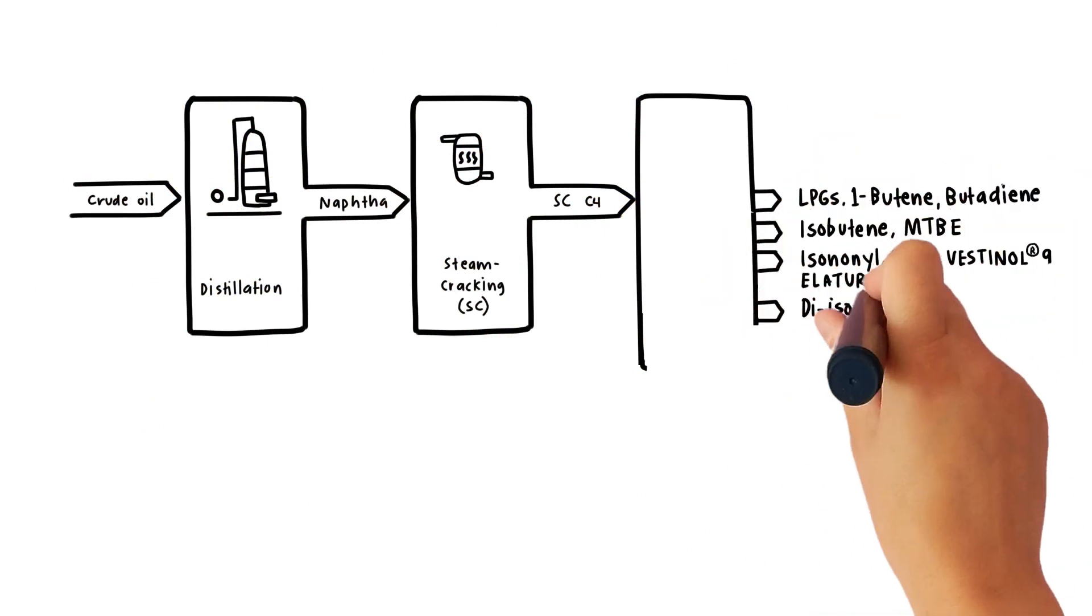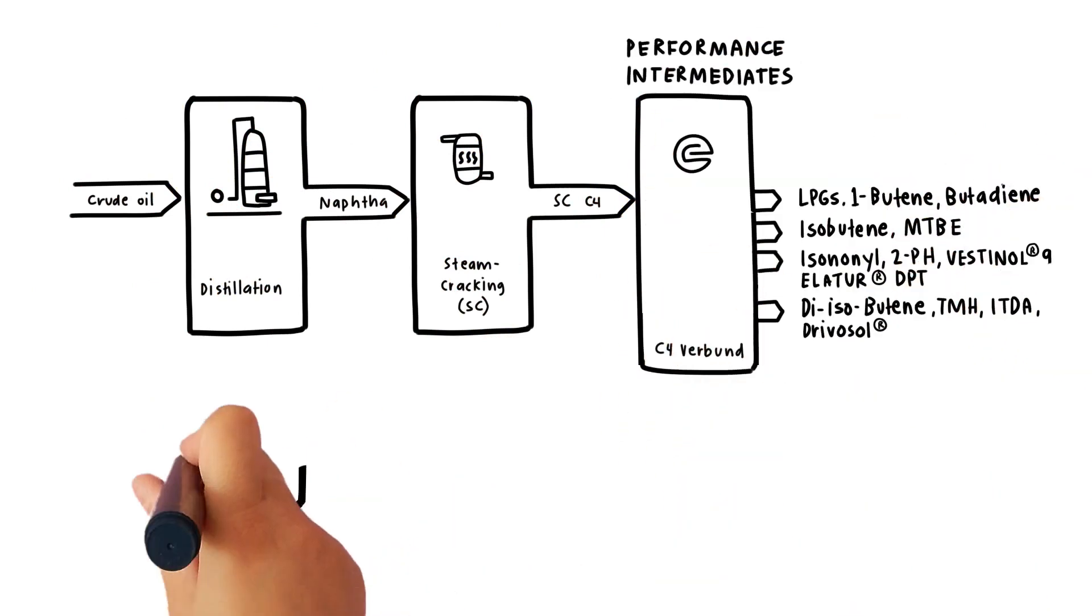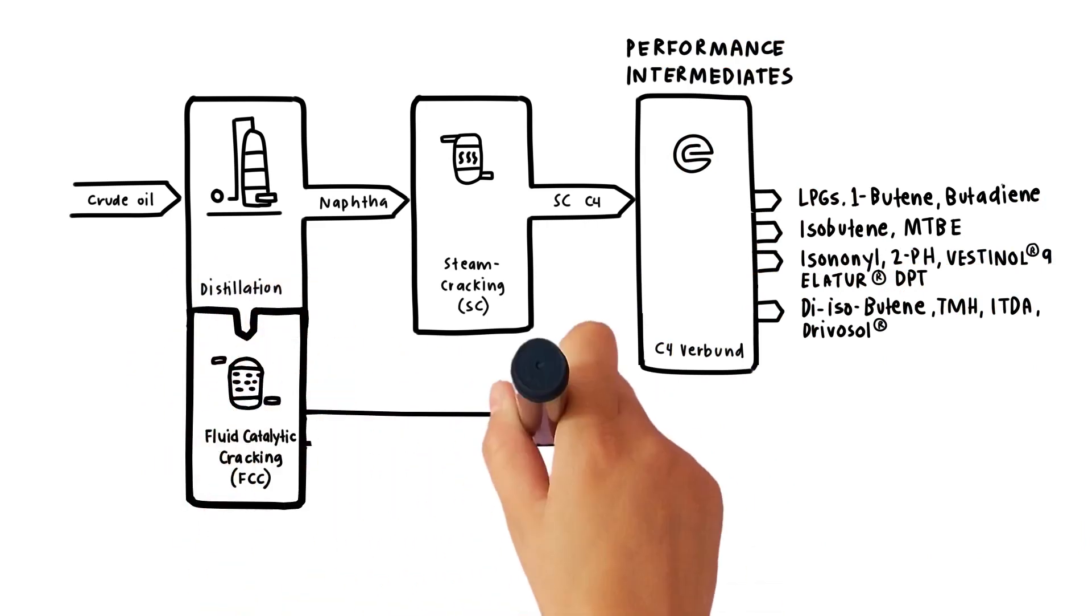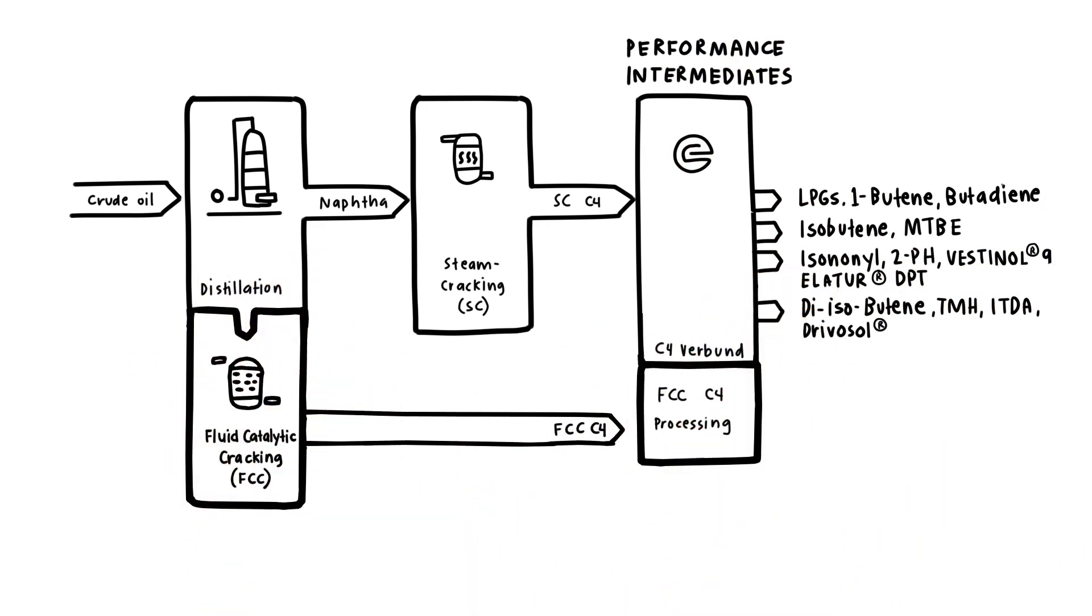With our state-of-the-art C4 production verbund, we are processing different raw material flows such as Crack C4 or FCC C4 from steam crackers or refineries.